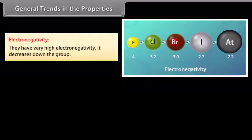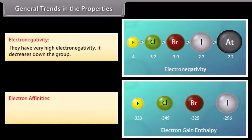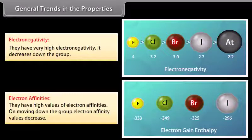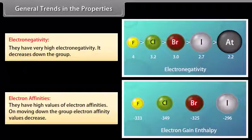Electronegativity: Halogens have very high electronegativity, which decreases down the group. Fluorine is the most electronegative element in the periodic table. Electron affinities: Halogens have high values of electron affinities; on moving down the group, electron affinity values decrease because the size of the atom increases. A low value of electron affinity for fluorine is due to the small size of the fluorine atom — in its compact 2p subshell, the added electron does not feel much attraction, resulting in a low value of electron affinity.